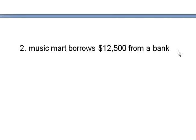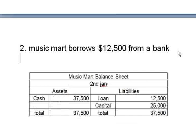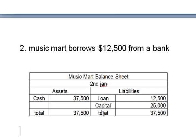The twelve thousand five hundred dollars comes in as cash and adds to the existing twenty-five thousand dollars, resulting in more cash. You can pause and think about how to record this. The answer is: there is one more entry under liabilities called 'loan' worth twelve thousand five hundred, and the total cash is now increased accordingly. This is the balance sheet as of January 2nd.